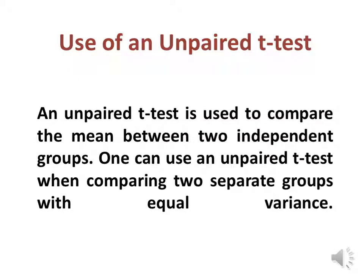An unpaired t-test is used to compare the mean between two independent groups. It can be used when comparing two separate groups with equal variance, where two independent and identically distributed samples are obtained — one from each of the two populations being compared. For example, if we evaluate the effect of a medical treatment and enroll 100 subjects, randomly assigning 50 to the treatment group and 50 to the control group, we have two independent samples and we use the unpaired t-test.